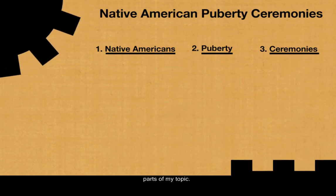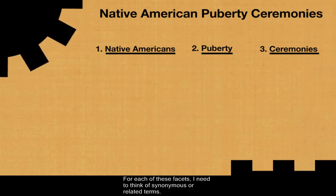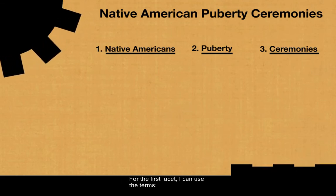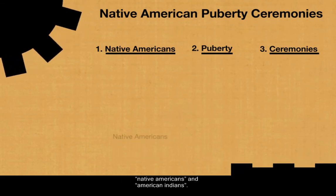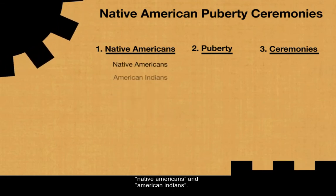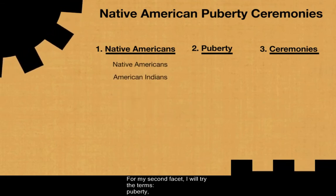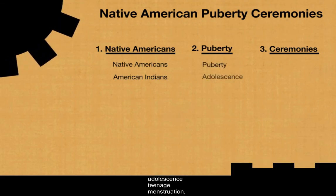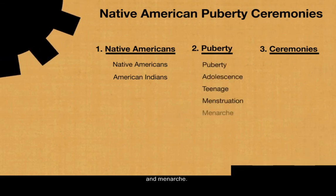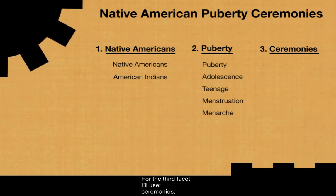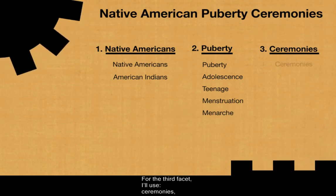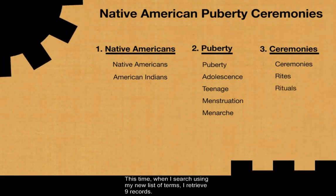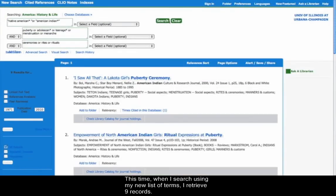For each of these facets, I need to think of synonymous or related terms. For the first facet, I can use the terms Native Americans and American Indians. For my second facet, I will try the terms puberty, adolescence, teenage, menstruation, and menarche. For the third facet, I'll use ceremonies, rites, and rituals. This time, when I search using my new list of terms, I retrieve nine records.